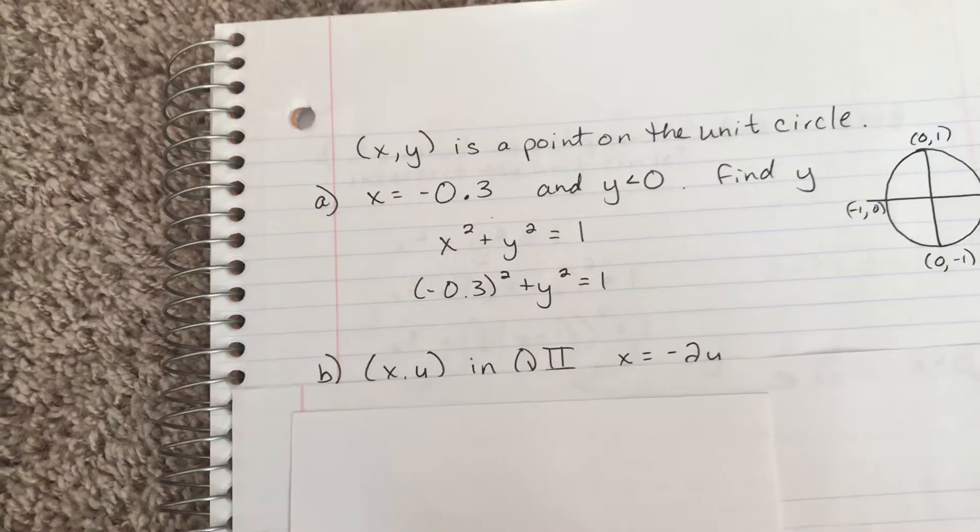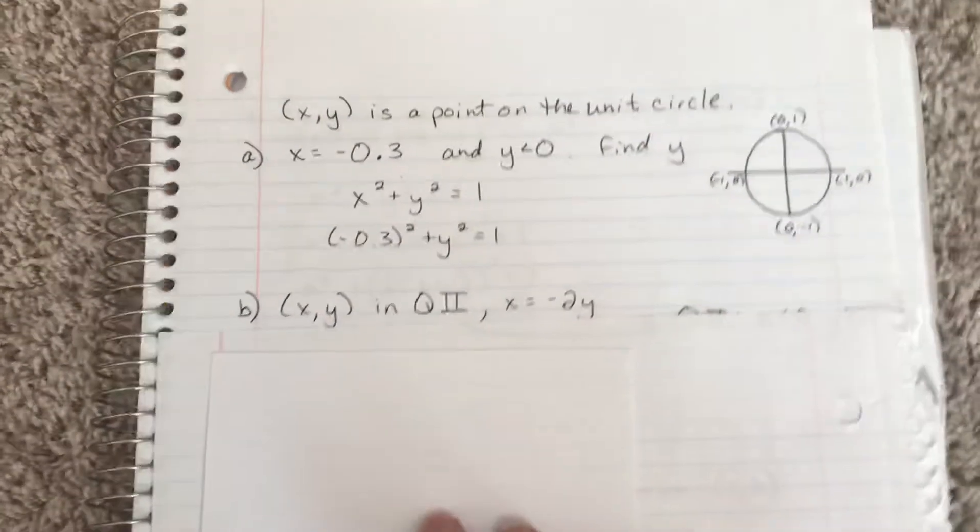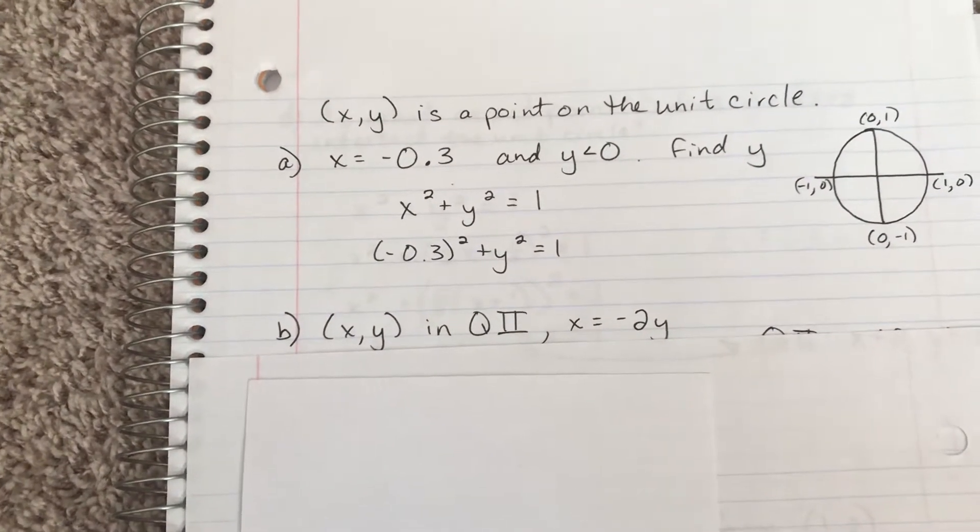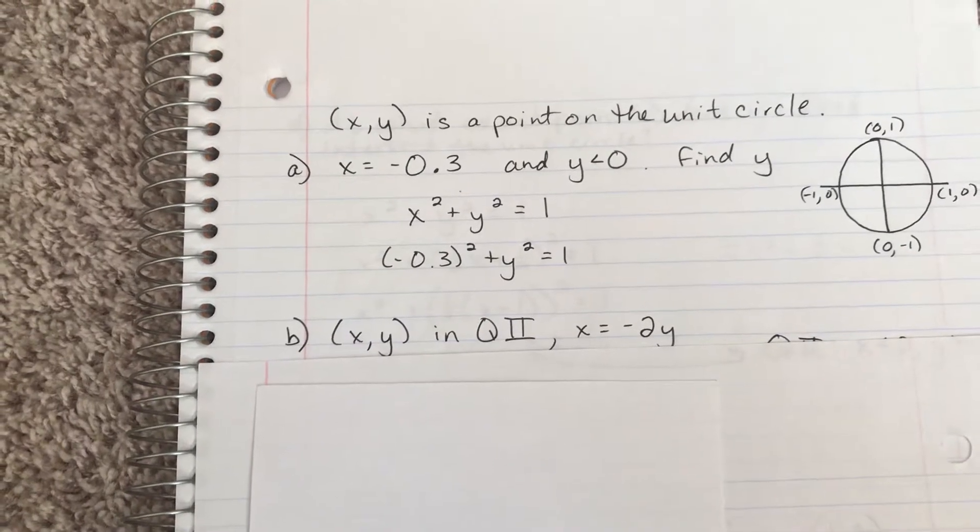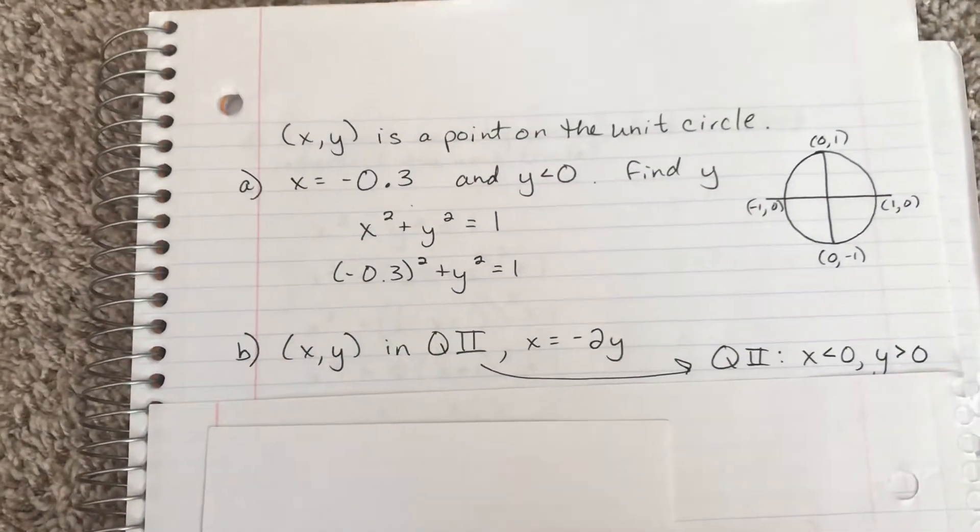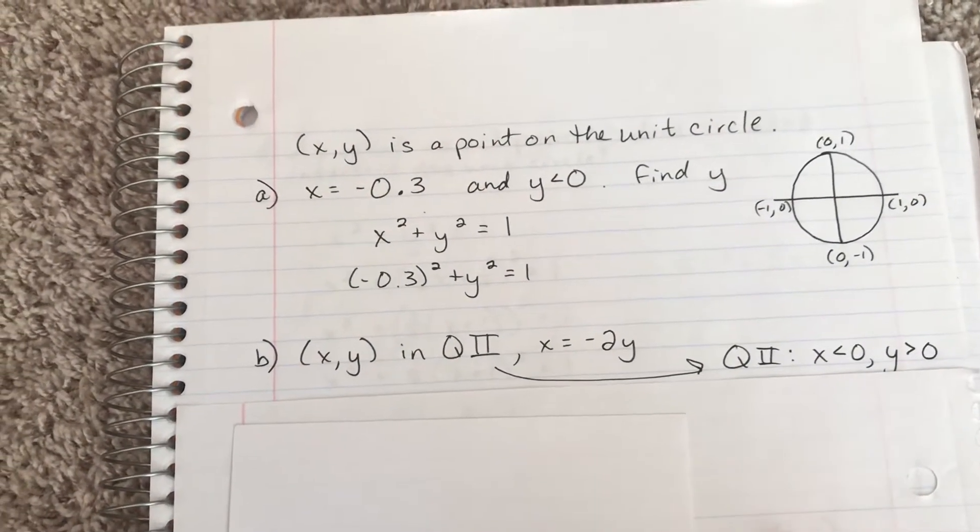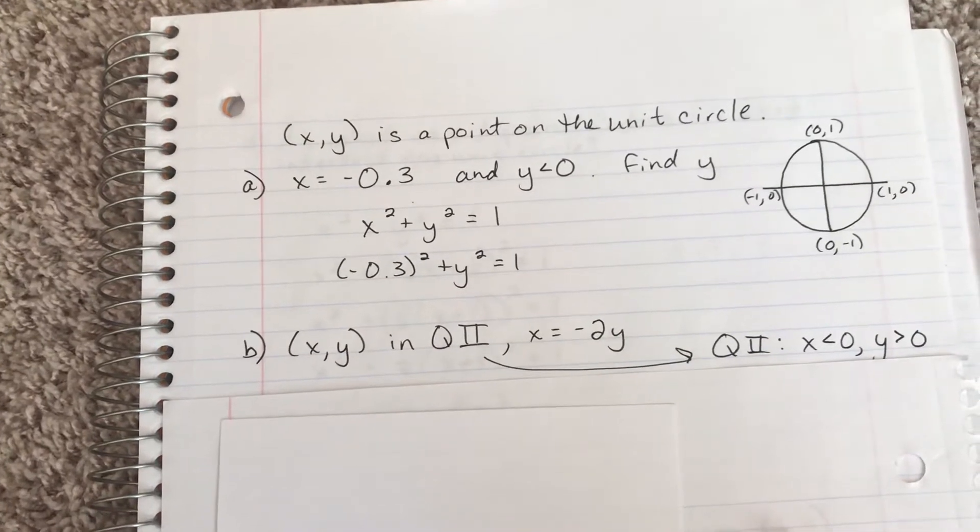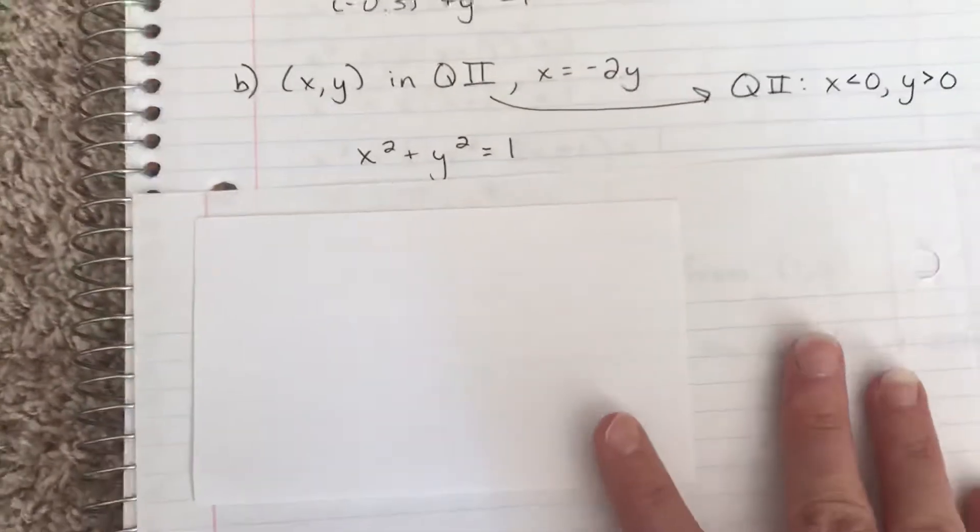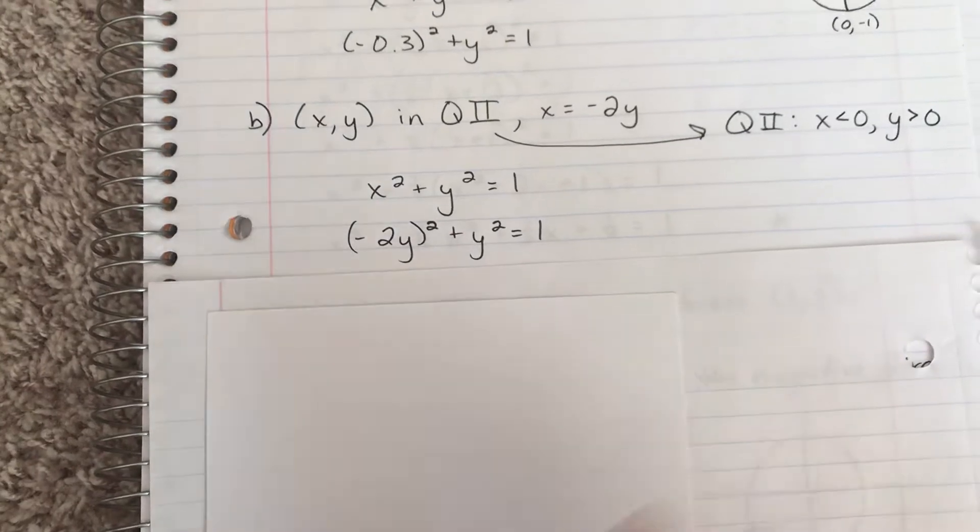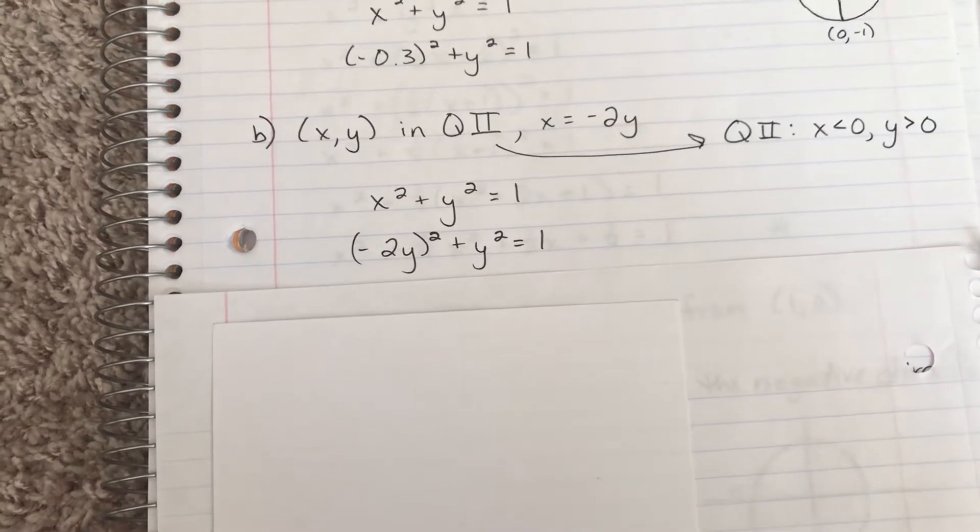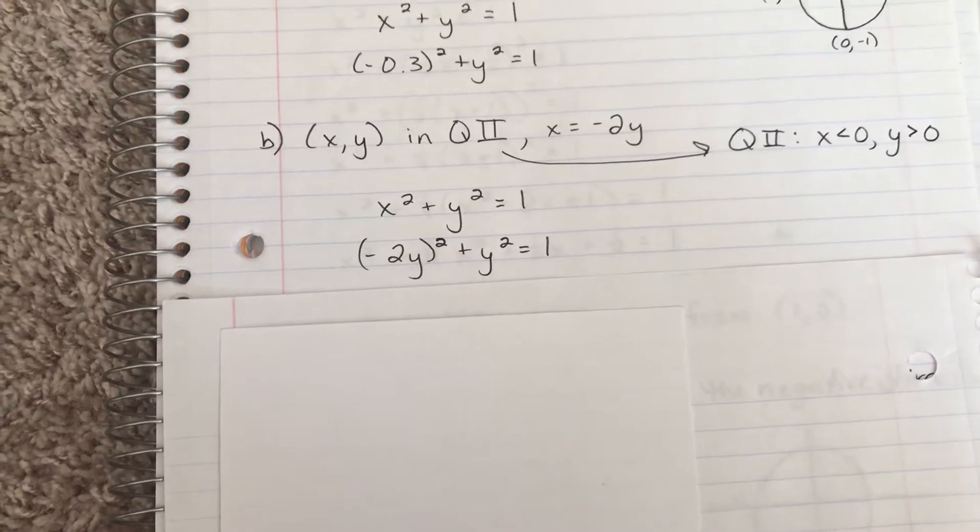Okay, on to part b. Part b said that the point is in quadrant 2, so now we're up here and x equals 2y. We're going to follow the same protocol, using that same equation, but noting since we're in quadrant 2, the x is going to be a negative value and the y is going to be a positive value. This time we're just going to substitute in negative 2y for x.